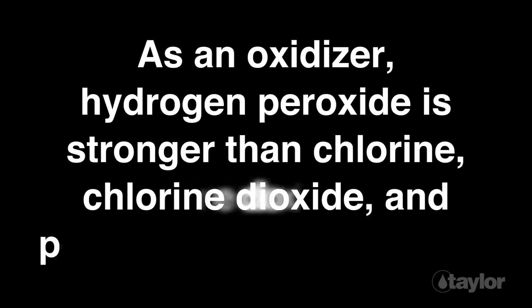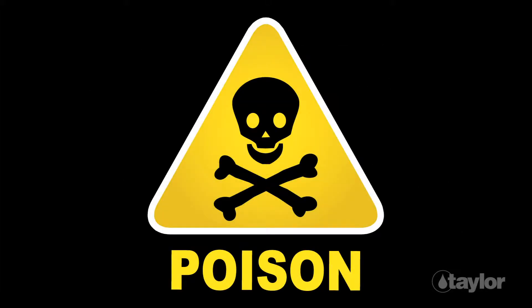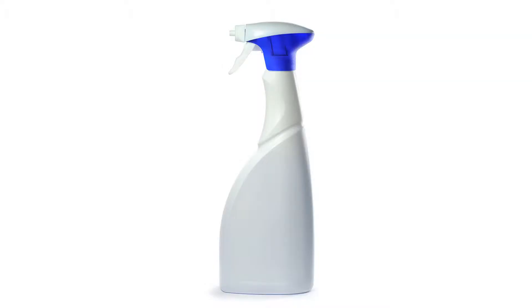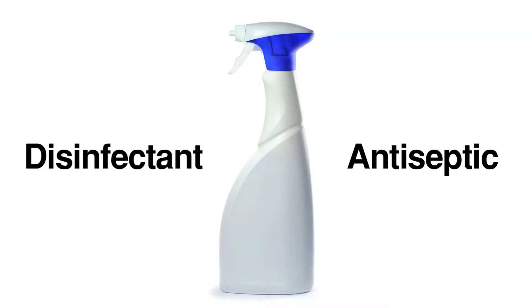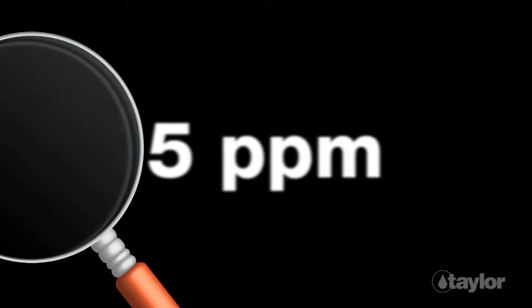Hydrogen peroxide is stronger than chlorine, chlorine dioxide, and potassium permanganate. In high concentrations it can be unstable and even poisonous. In lower concentrations it works well as a disinfectant and antiseptic. Hydrogen peroxide is not, however, effective in controlling microbial fouling in cooling waters, because it is destroyed by catalase, an enzyme produced by bacteria.